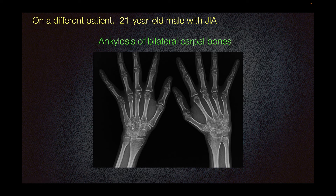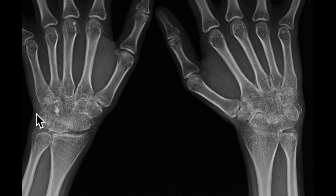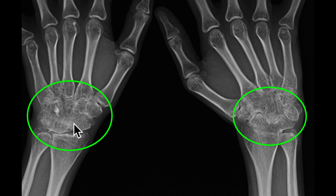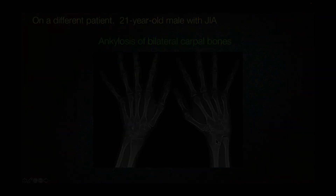This is a different patient, a 21-year-old male with JIA. Here we can see ankylosis of the bilateral carpal bones — fused carpal bones bilaterally without any detectable joint space in this region. There may be slight joint space visualized in some areas, but most of the carpal bones and the radiocarpal articulation are fused.